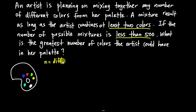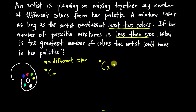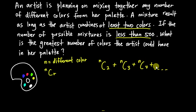We don't know how many colors are on the palette, so let's call it N. We need to use NCR. Since the question says at least two colors, we need NC2 + NC3 + NC4, and so on all the way up to NCN. The sum of all these possible mixtures must be less than 500. When I tried inserting the NCR formula — N factorial over (N minus R factorial times R factorial) — it became too complex to solve directly.